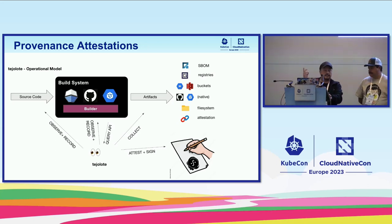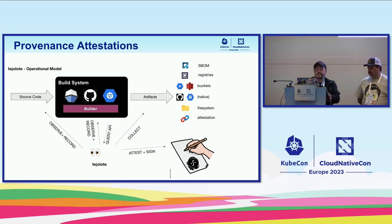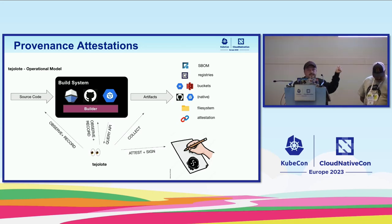The current build systems that Tejolote supports are GitHub Actions, Google Cloud Build, and we've almost finished support for Prow so we can record Kubernetes project builds. You ingest the source code through the build system, point it to record artifacts from an SBOM, from an OCI registry to find new images, or search for archives or binaries. Most importantly, it will generate the attestation and sign it with SigStore when it's done.